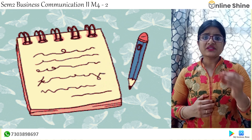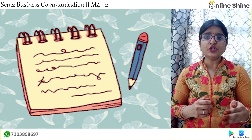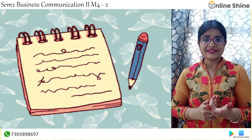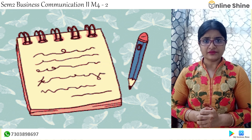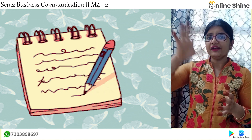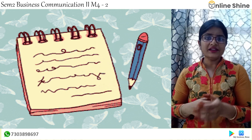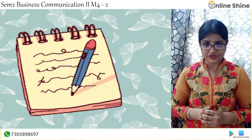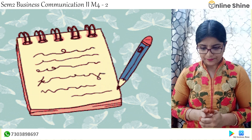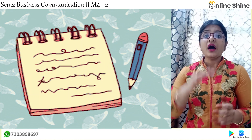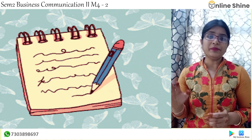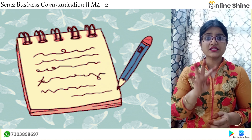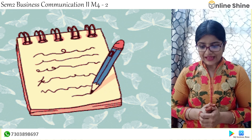For one-word substitution, for example, if a person is not able to read and write, I can say that he is illiterate. So 'not able to read and write' means illiterate. Make use of one-word substitutions for giving a good summary. Then, avoid unnecessary repetition.